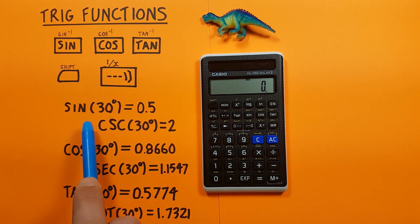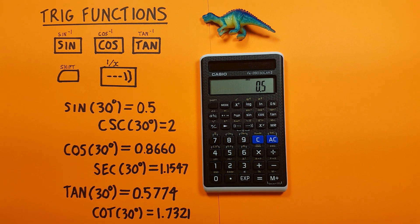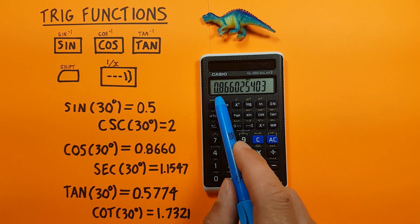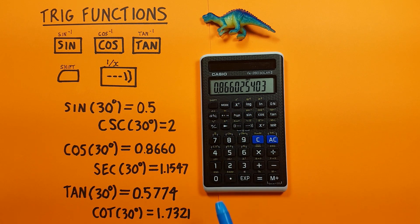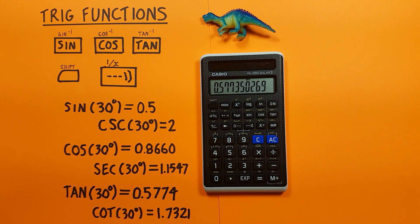For example, if we wanted to find the sine of 30 degrees, we type in 30 and then just press the sine key, and we get sine of 30 equals 0.5. Same with cosine: 30, cos, gives us 0.8660. And tan of 30: again, 30, press tan, and we get 0.5773.